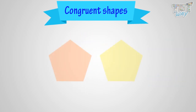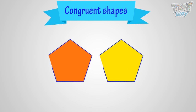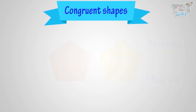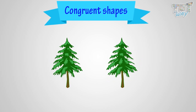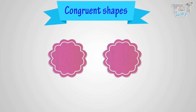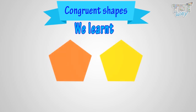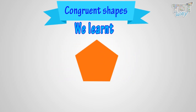Let's have a look at some more examples of congruent shapes. These are congruent shapes, as both the size and shape are exactly the same. These two are congruent shapes — the shape and size of these two shapes are the same. Here are shapes that have exactly the same shape and size.